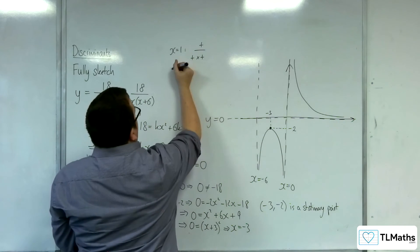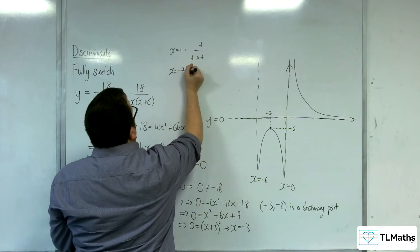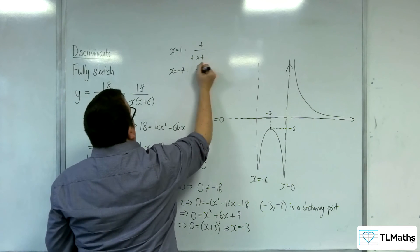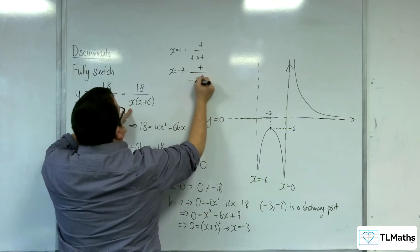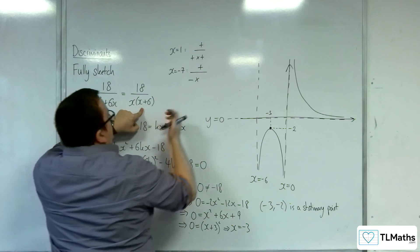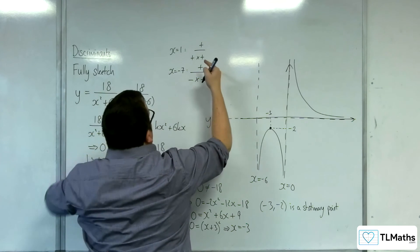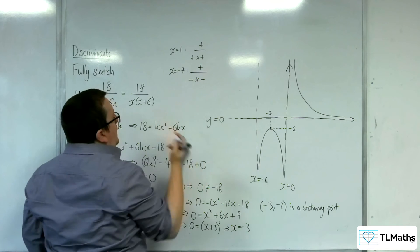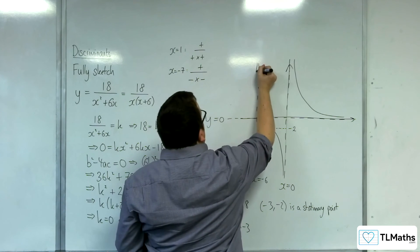If x is equal to minus 7, then we've got 18 on the top, which is positive. Then we've got a negative times by minus 7 plus 6, which is minus 1, which is a negative. So positive over positive is positive. And so the curve does this.